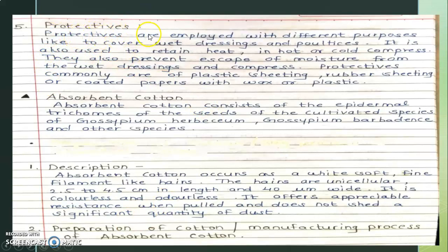The fifth classification is protectives. Protectives are employed to cover wet dressings and for support. They are also used to retain heat and are used in hot or cold compression. They prevent escape of moisture from wet dressings and compresses. Protectives are commonly made of plastic sheeting, rubber, and coated papers with wax or plastics.